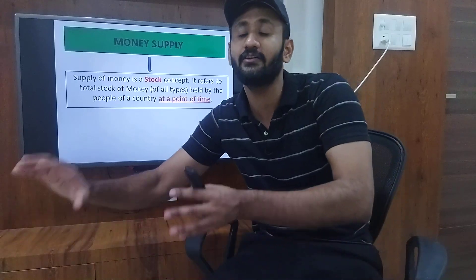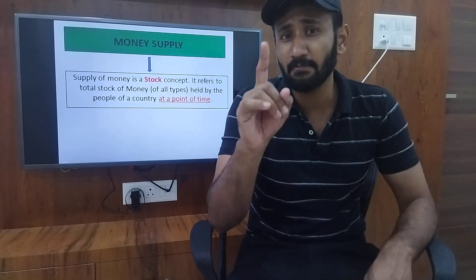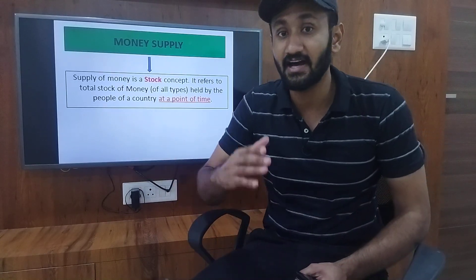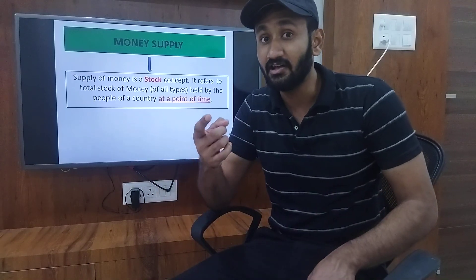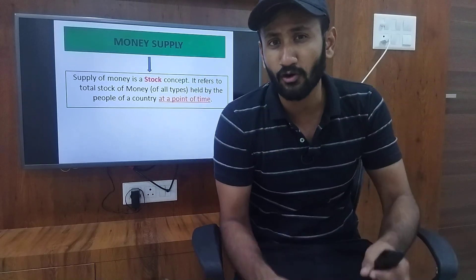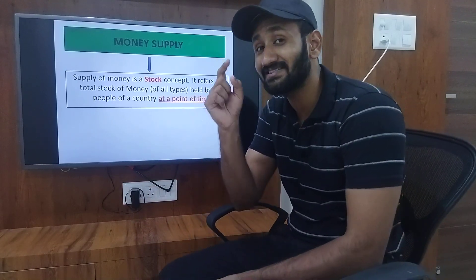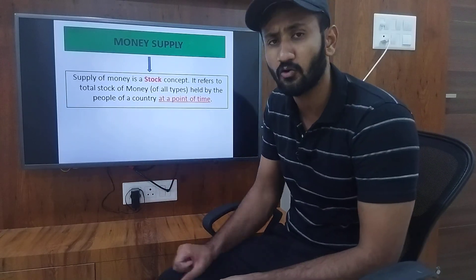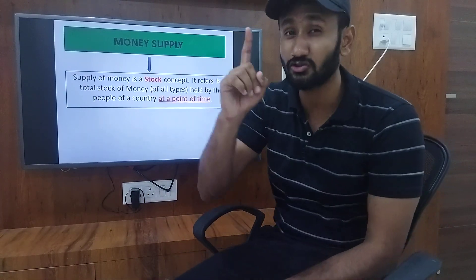So the key point is: stock is counted at a point of time, and flow is counted over a period of time. In economics, your parents' or guardian's income is a flow — it comes every month, every week, as salary. But the money in their bank account, or their wealth — your plot, your farmhouse, your house — that is your stock, because its value is measured at a point of time. If today you want to sell your house, it will go for 1 crore rupees — so that is your stock. Similarly, money supply is a stock concept.